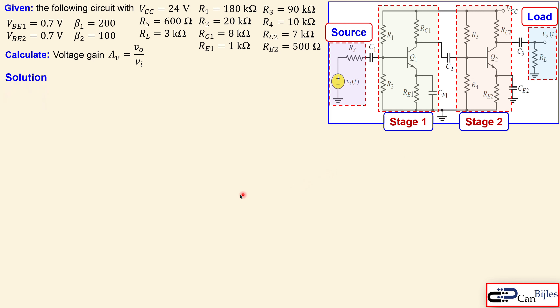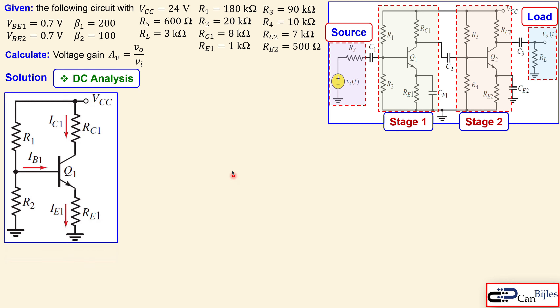In the solution we start with the DC analysis, and from there we get parameters used in the AC analysis. For the DC circuit, all capacitors are open — C1, CE1, CE2, and CE3. This means stage one and stage two are decoupled, and the load and source are also decoupled. So we can consider stage one and stage two as independent.